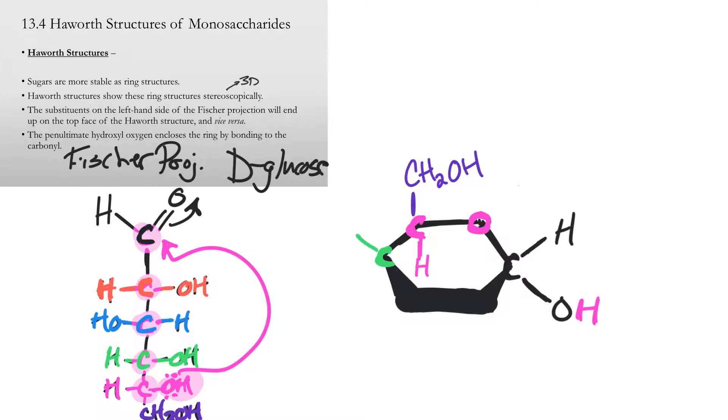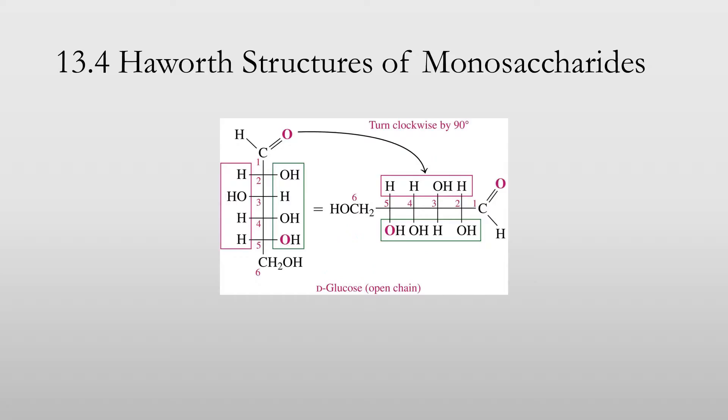Then we've got the green carbon here. The hydrogen is on the left, so it's above. The OH is on the right, so it's below. Then we've got the blue carbon right here, which has the hydroxyl group to the left, so above. And we draw those straight up. That's kind of overlapping with everything here, but I'll write it like that. And this is why Haworth structures are not the best, but you get a hydrogen down below, and then you have the red carbon right here with the OH below and the hydrogen above. And that's the Haworth structure of, again, D-glucose.